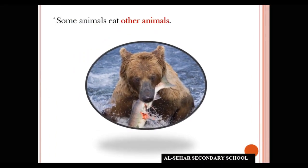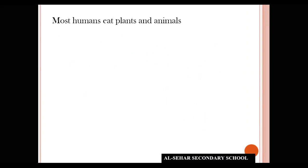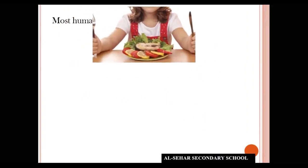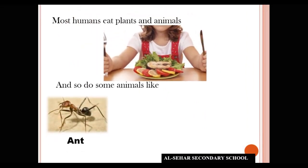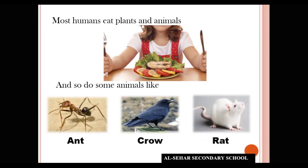Last, most humans eat plants and animals. Some animals like ants, crow, and rat also eat both. Students, these animals are called omnivores. Allah hafiz.